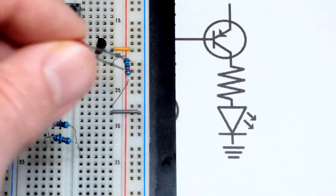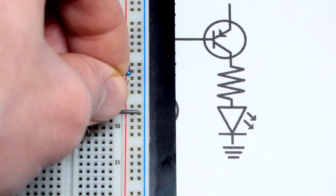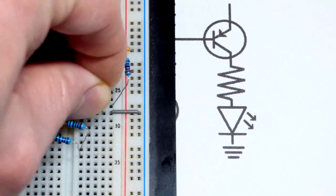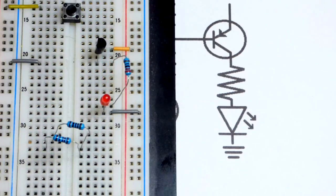Long leg is the anode, that side of the LED schematic. Short leg is the cathode on that side. Long leg, the anode, is going to the resistor. Right now you can see that once this goes in, the LED is off because the transistor is off.